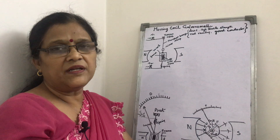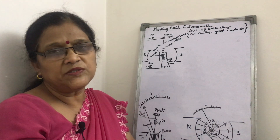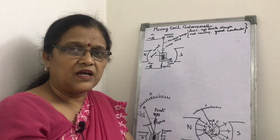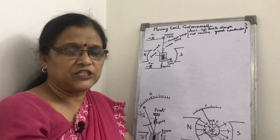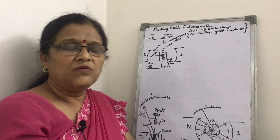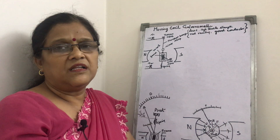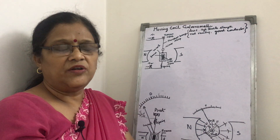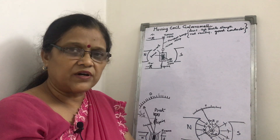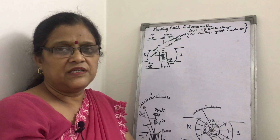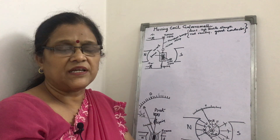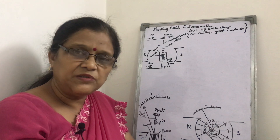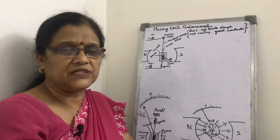The galvanometer is a device to detect the presence of current in a circuit. Its principle is based on torque. Whenever a current-carrying coil is placed in a magnetic field, it experiences a torque due to which the coil is deflected, and the magnitude of that deflecting torque depends on the strength of current flowing through it.